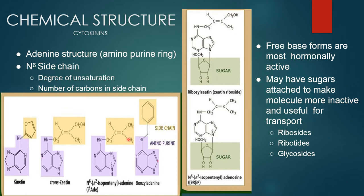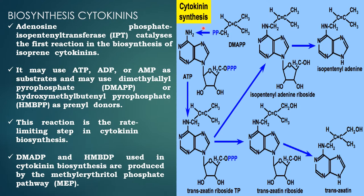The degree of unsaturation also varies and the number of carbons in the side chain also varies. There will be a free base form, which is mostly hormonally active, and may have a sugar attached to make the molecule more inactive and useful for transport as riboside, ribotide, or glycosides.